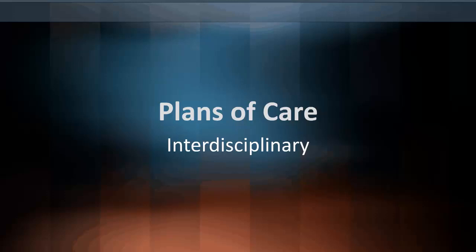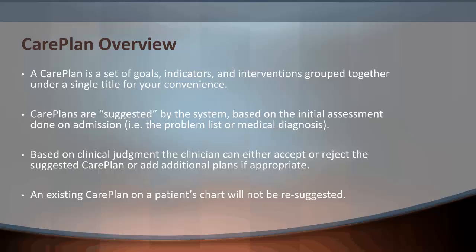Remember that care plans are Joint Commission and Centers for Medicare and Medicaid requirements. A care plan is a set of goals, indicators, and interventions grouped together under a single title for your convenience. Care plans are suggested by the system and are based on the initial assessment done on admission, for example, the problem list or the medical diagnoses.